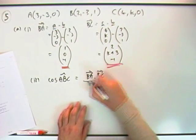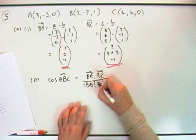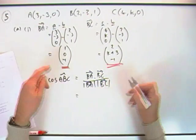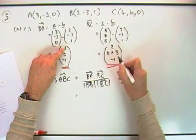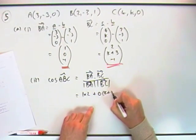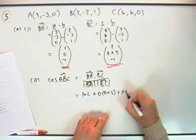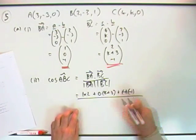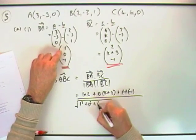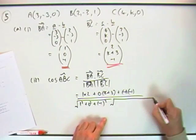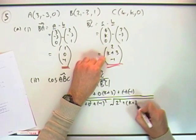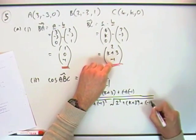So I've got 1 times 2 plus nothing times k+3 plus (-1) times (-1), over the length of BA which is 1² + 0² + (-1)², over 2² + (k+3)² + (-1)².